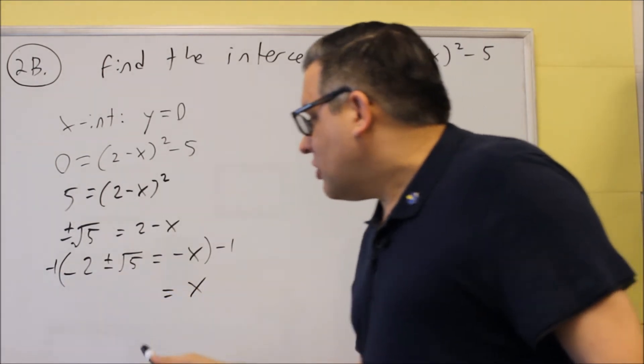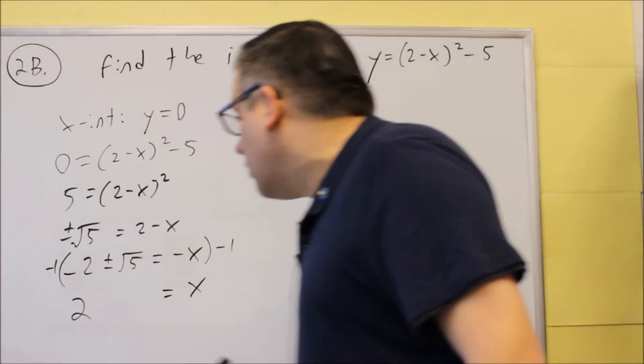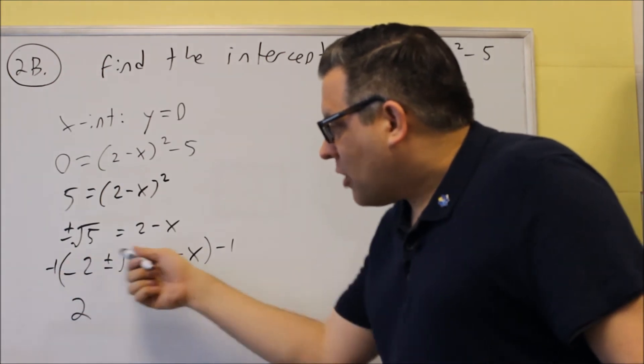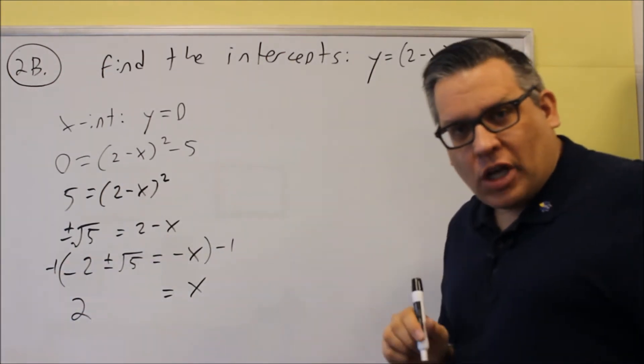Now, on this side, negative times the negative will give you a positive 2. Now, this is already plus or minus. If you multiply that by a negative, it's still going to remain plus or minus.